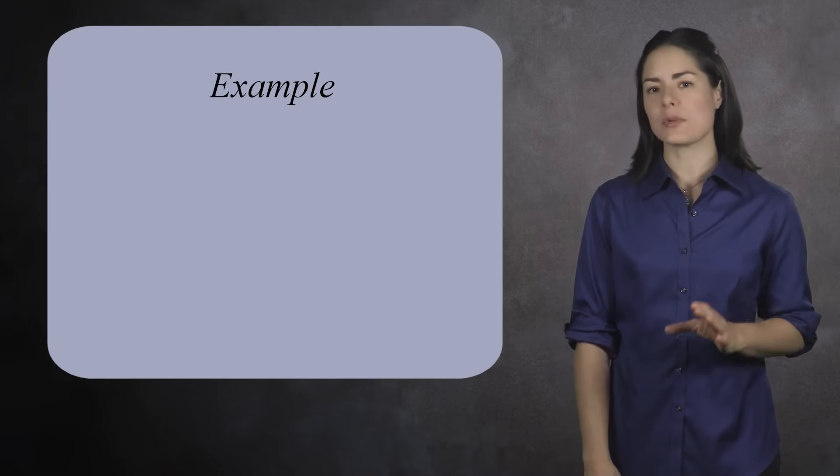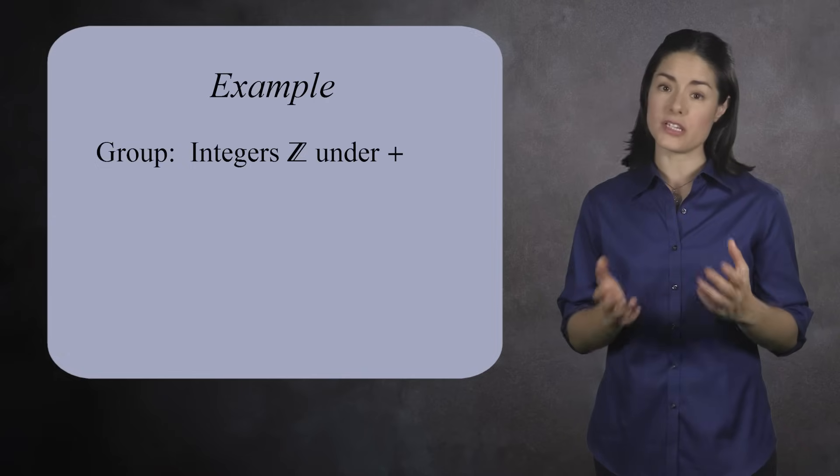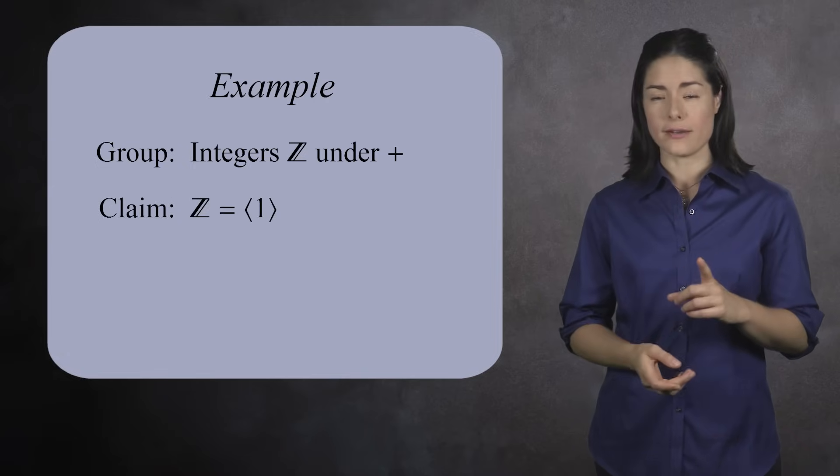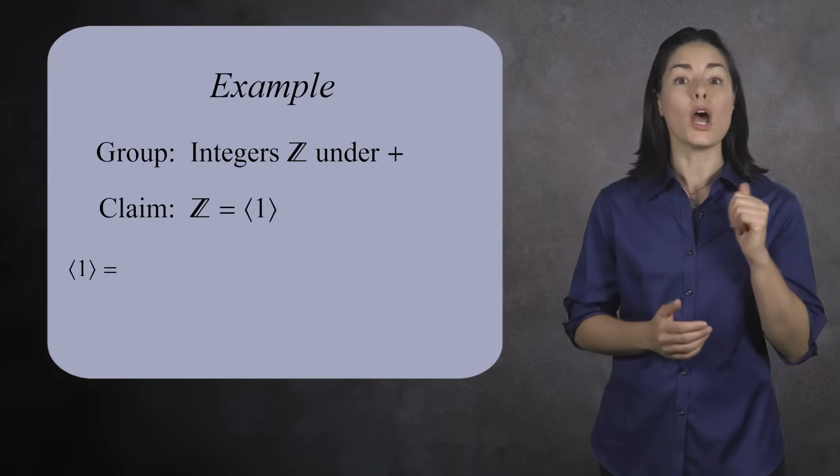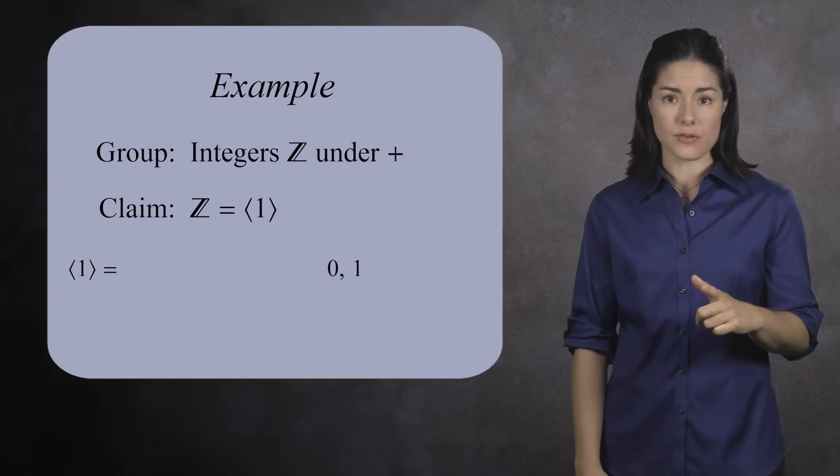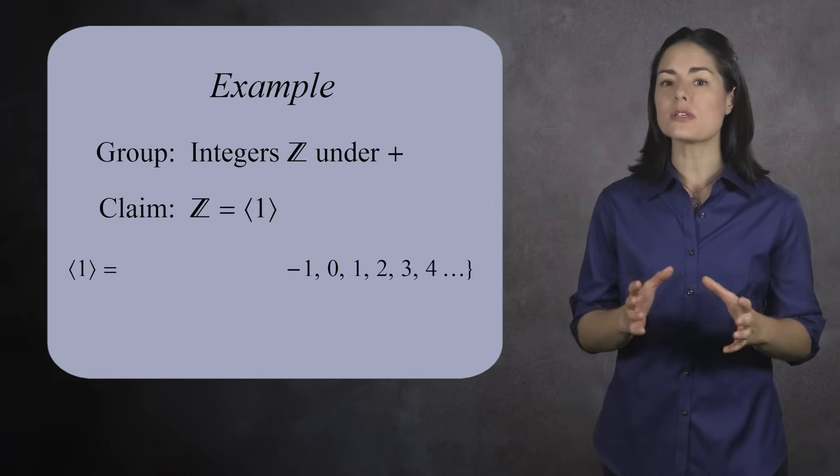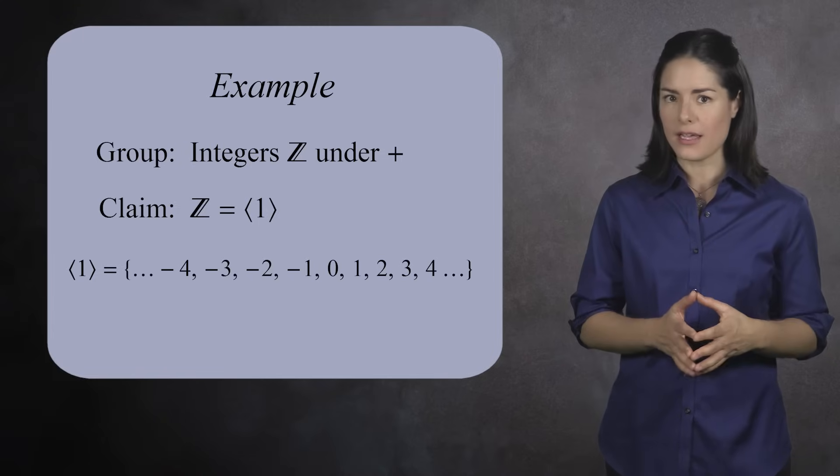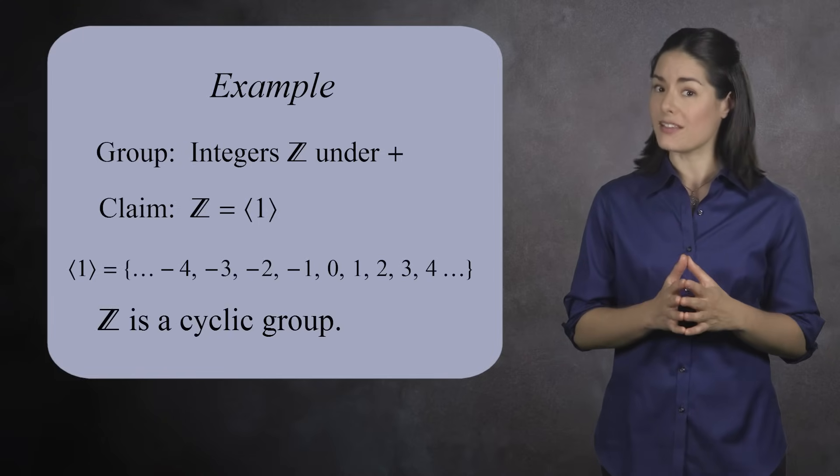Let's look at a few examples of cyclic groups. A classic example is the group of integers under addition. The integers are generated by the number 1. To see this, remember the group generated by 1 must contain 1, the identity element 0, the additive inverse of 1 which is negative 1, and it must also contain all multiples of 1 and negative 1. This covers all the integers. The integers are a cyclic group. The integers are an example of an infinite cyclic group. Let's now look at a finite cyclic group.